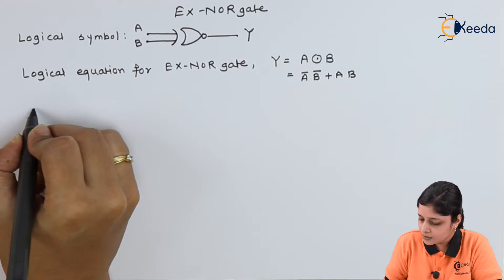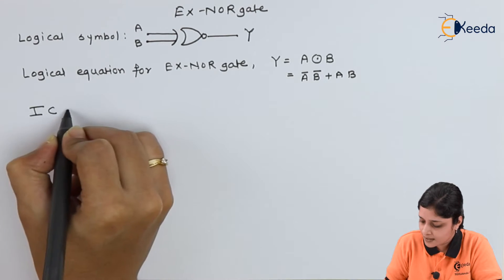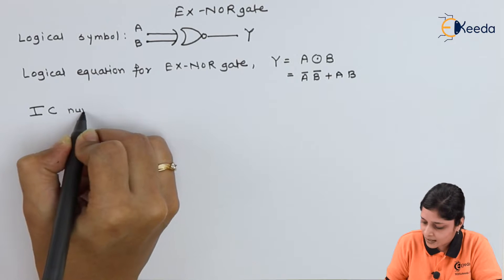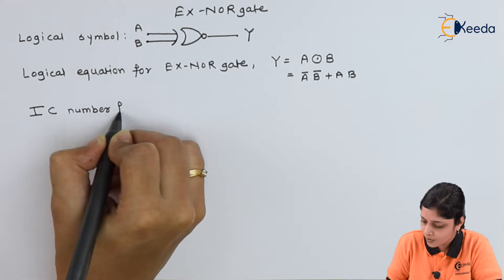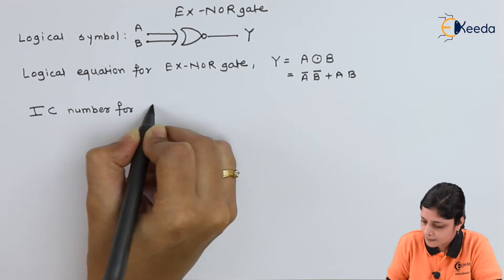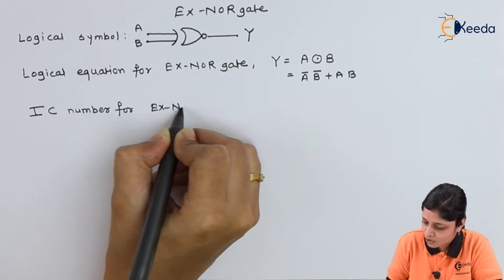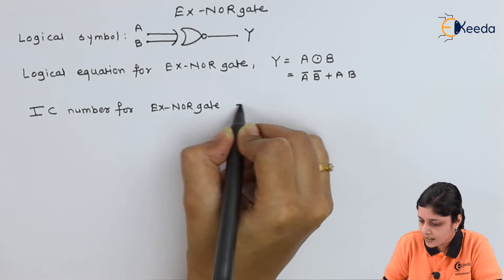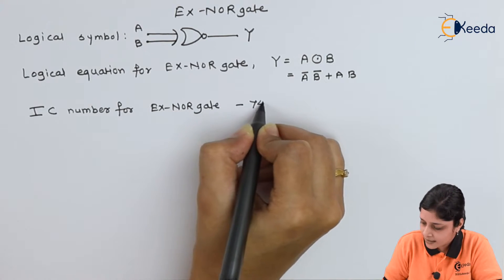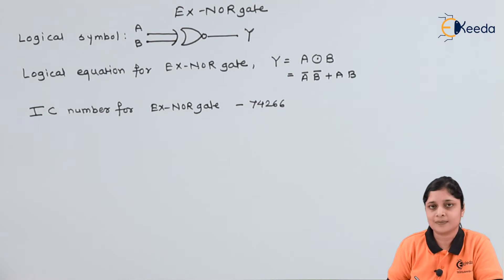The next step is the IC number for the XNOR gate. The IC number is 74266.